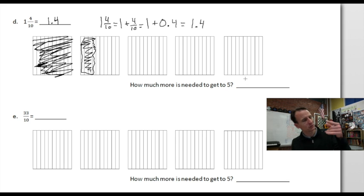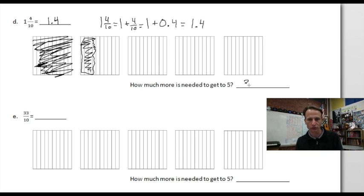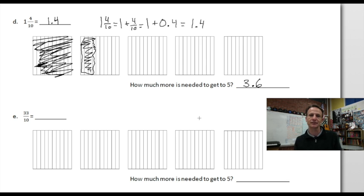How much more is needed to get to five? Looking at the model — there are five wholes here, so we need one, two, three whole numbers. There are four out of ten shaded, which leaves six. So three and six tenths is how much more we need to get to five. You could also subtract to confirm.